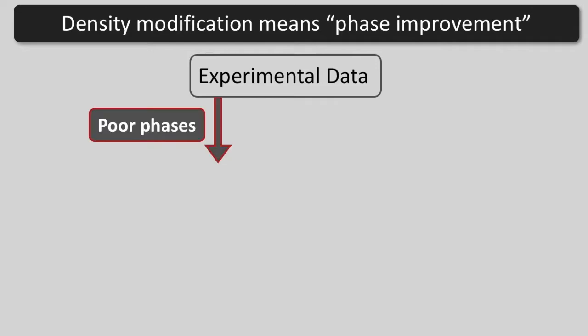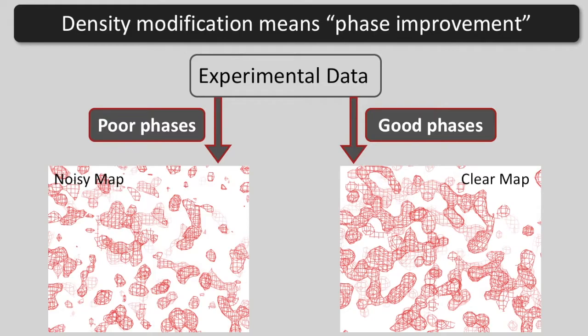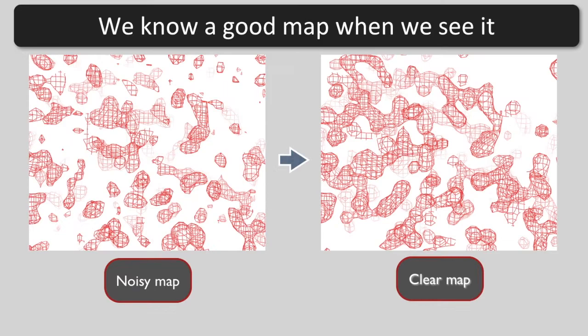With the same data, poor phases lead to a noisy map and good phases give a clear map. Density modification is improving the phases to obtain a clear map. Look at these two maps. The one on the left is noisy and the one on the right is clear. We can list things that are different in the clear map.